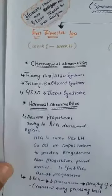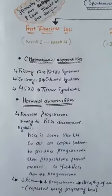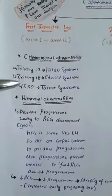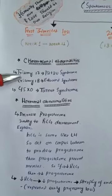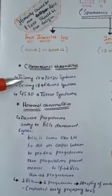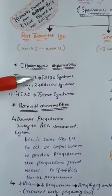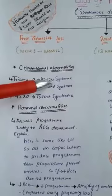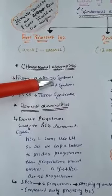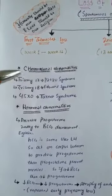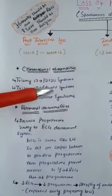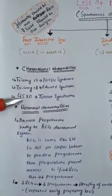Loss of pregnancy in the first trimester may occur because of chromosomal abnormalities or hormonal abnormalities. For chromosomal abnormalities, remember: Trisomy 13 — that is Patau syndrome — is the most common cause of spontaneous abortion. Also Trisomy 18, Edward syndrome, and 45X — Turner syndrome.